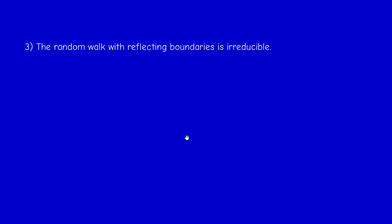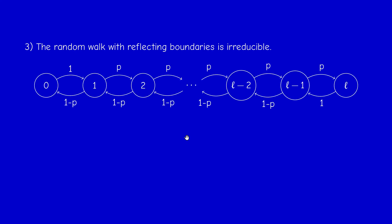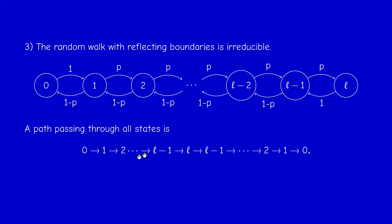Next example: the random walk with reflecting boundaries, discussed in section 1.1, which can model a gambler's random walk. You should see that all states communicate. To verify this, just write down a cycle — not necessarily Hamiltonian. For example, starting from zero: go from zero to one, one to two, up to l−1 to l, and then go backwards. This is a cycle, though not Hamiltonian because states from one to l−1 are visited twice.